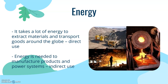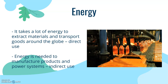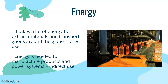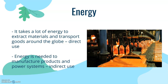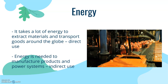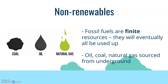It takes a lot of energy to extract materials and also transport goods around the globe. This is direct use — fuels being burned by trucks and ships, for instance. But energy is also needed to manufacture products and power systems — this is indirect use that we tend to forget about. Here I've included a video of glass bottles being made because it's a very energy intensive process.